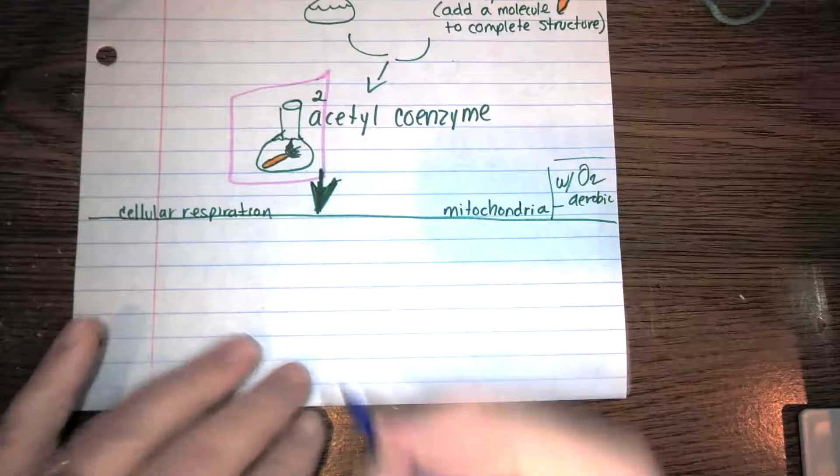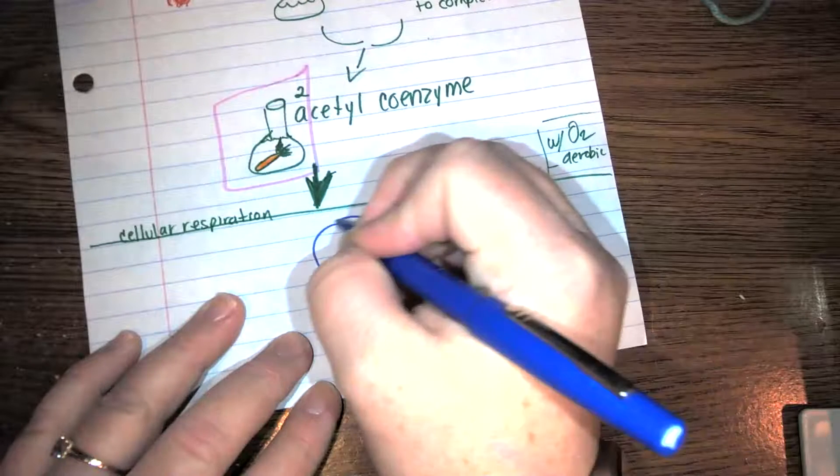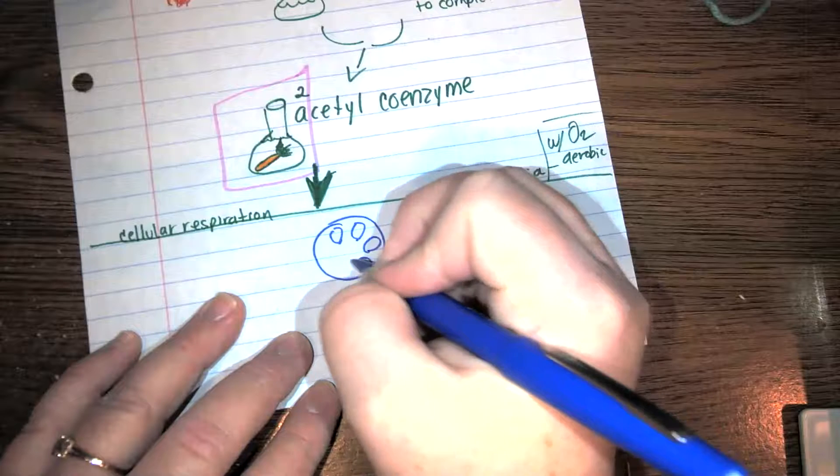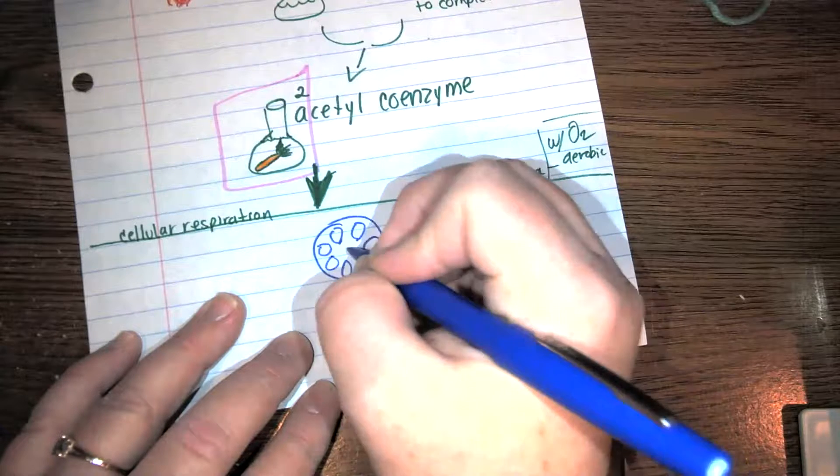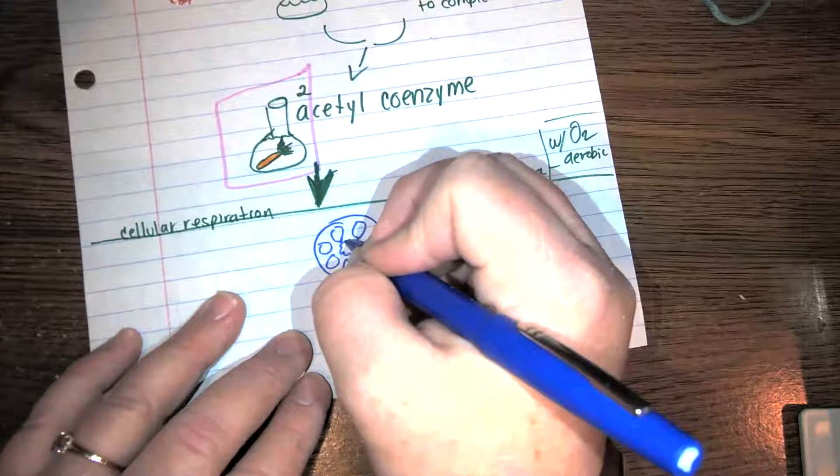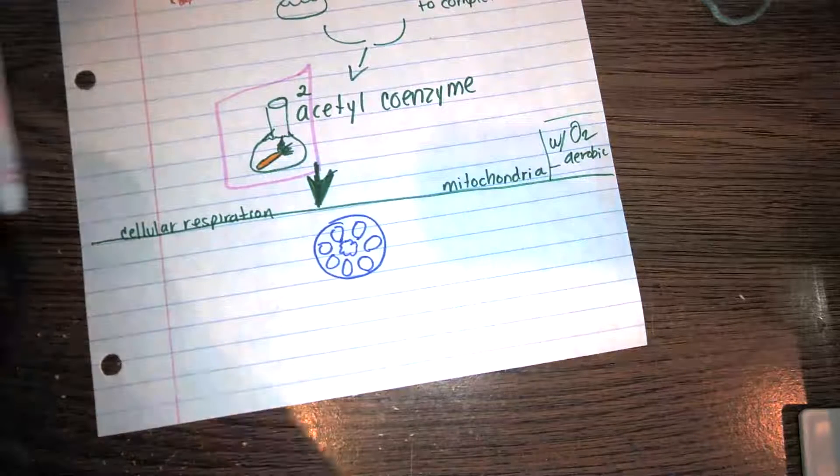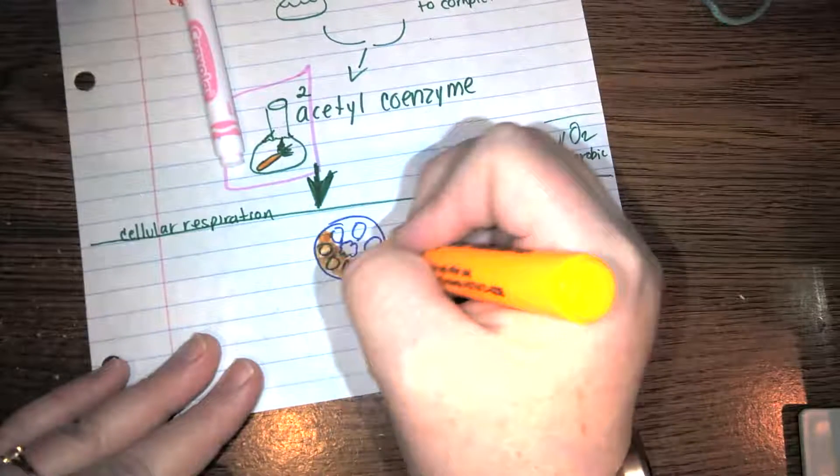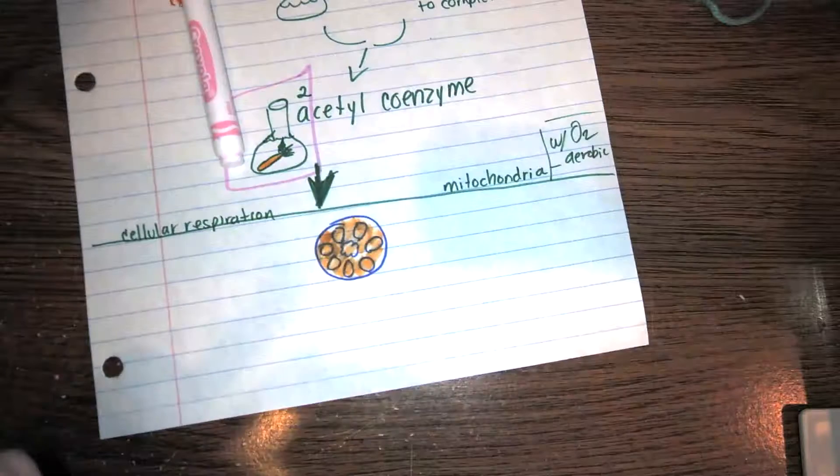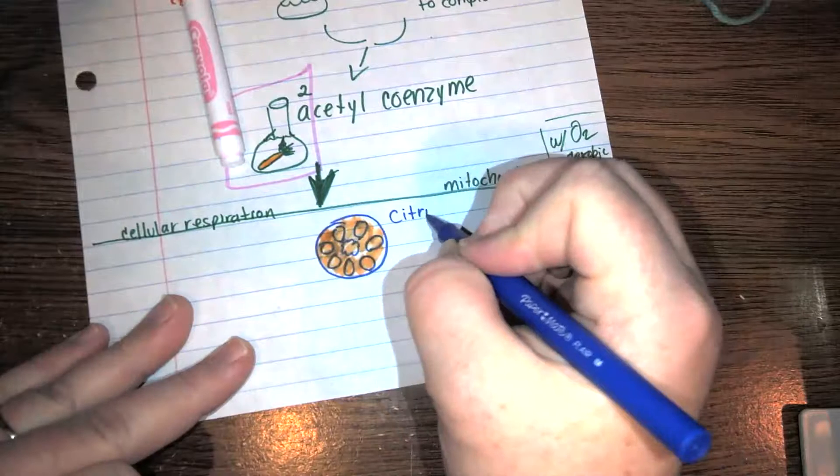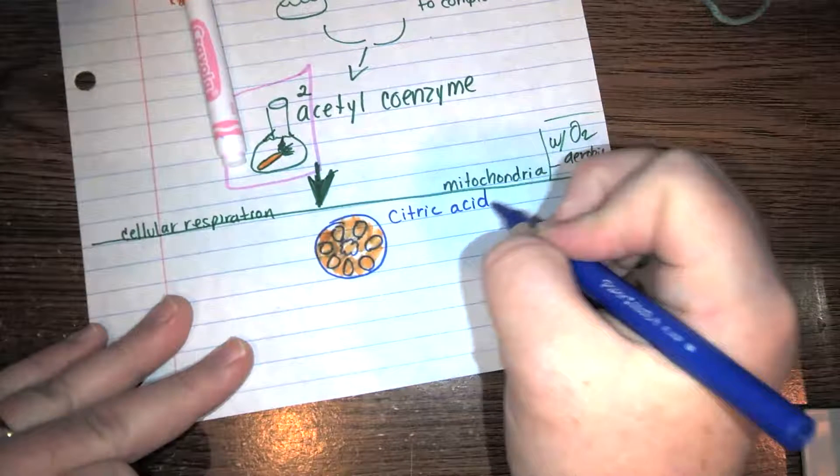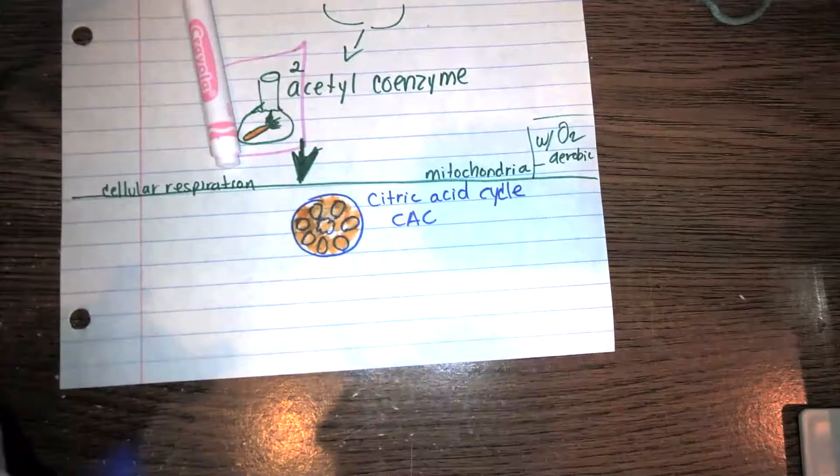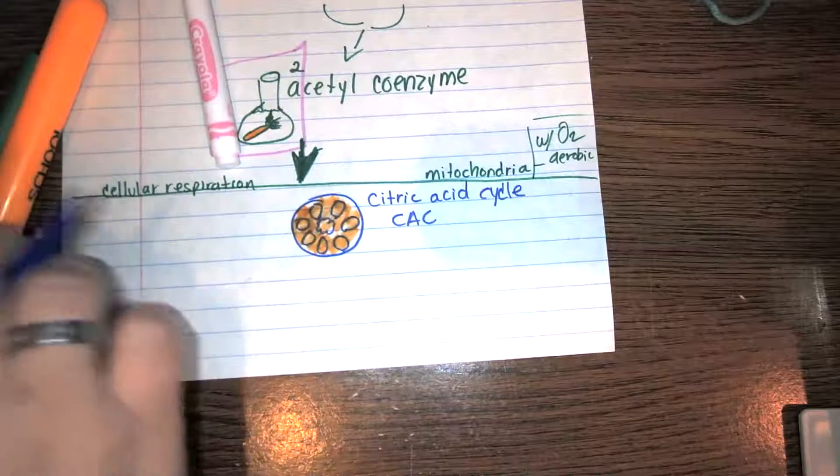What you need to understand is through a series of reactions, we have the cycle, it's called the citric acid cycle. So if I were you, and I know some of you like to draw pictures, draw your best picture of like a piece of fruit, whether it be an orange or, let's see, I'll make this an orange. Get it? Citric acid cycle. I refer to it as the CAC.